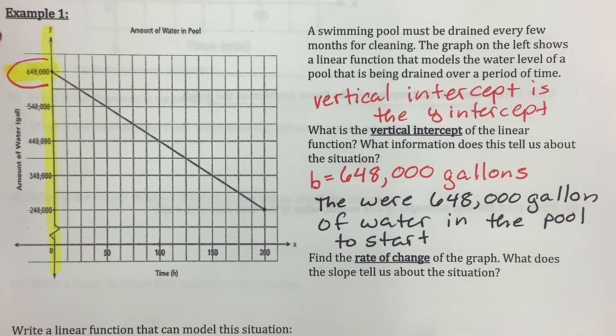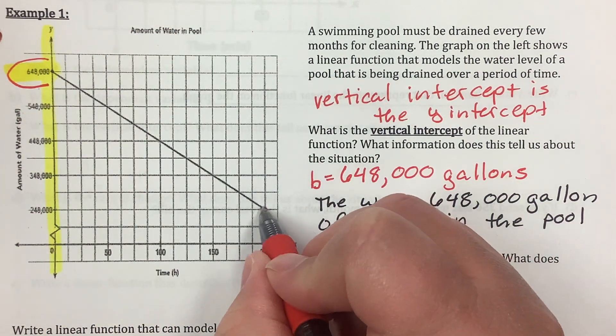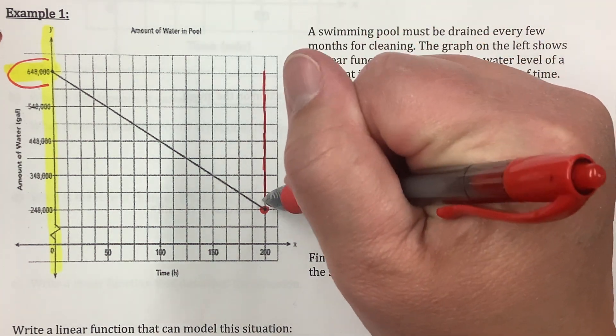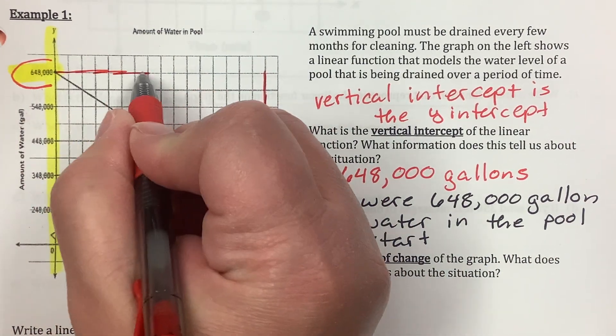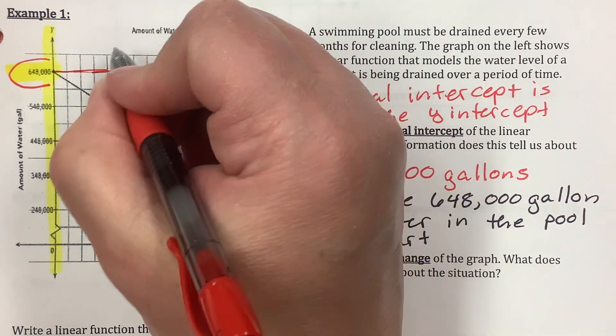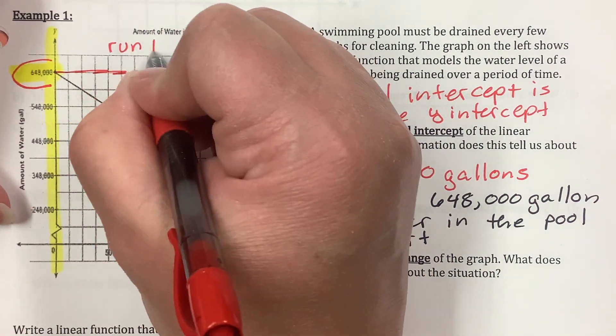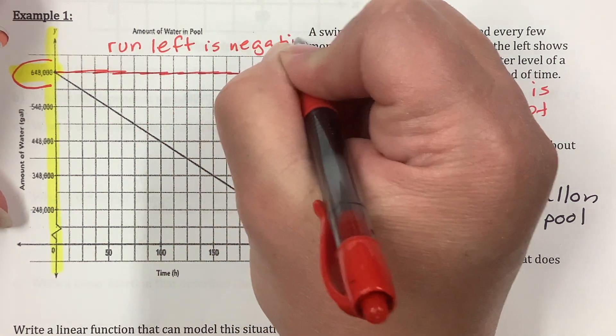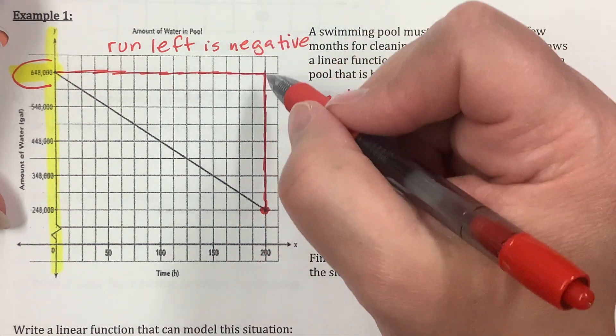The next one says find the rate of change. You know rate of change is slope. So, you're going to find the rate of change of the graph. And what does that slope tell you about the situation? Okay. So, how am I going to find rate of change? Well, I'm going to take two points. I'm going to take this point, and I'm going to take this point, and I'm going to find the rise, and I know that I'm running left. So, run left is negative.